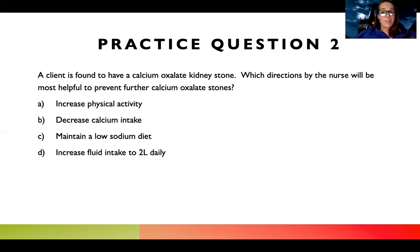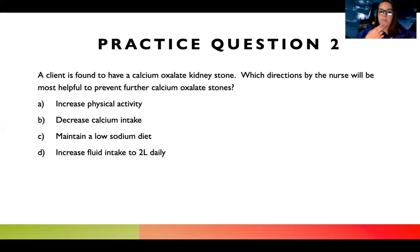Choice B says decrease calcium intake. That sounds like a good one because calcium is in the question — it seems like a gimme. But as a nursing student you're probably saying this is too easy. Choice C says maintain a low sodium diet — that sounds cardiac-related, but I think I remember something my professor said about calcium oxalate stones and sodium, so I'm going to keep that one. Choice D says increase fluid intake to two liters daily. That seems like a good answer, but is it specific for calcium oxalate stones? A lot of students get caught picking an answer that's generally a good thing to do but doesn't directly answer the question.